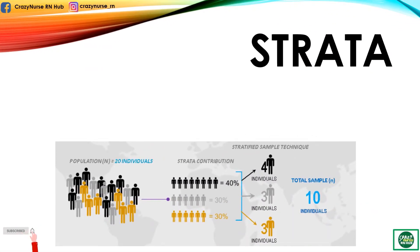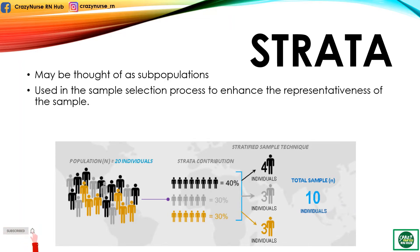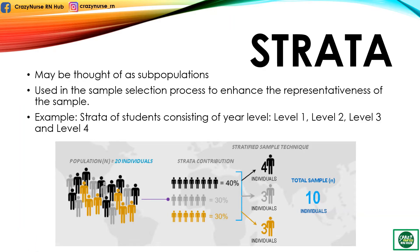Now let's have strata. It may be thought of as a subpopulation, and it is used in the sample selection process to enhance the representativeness of the sample. For instance, strata of students consisting of year level, such as level 1, level 2, level 3, and level 4.